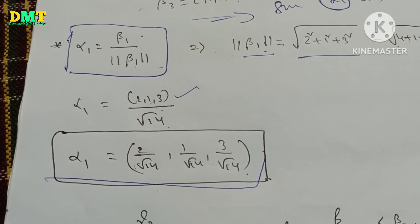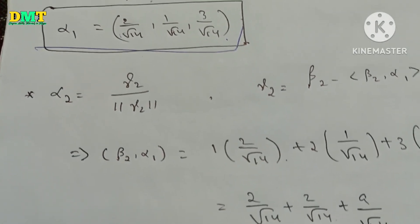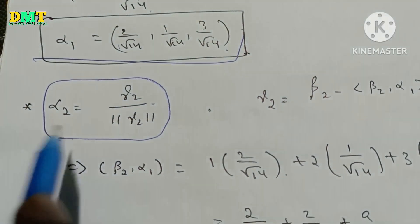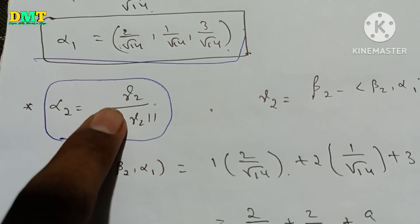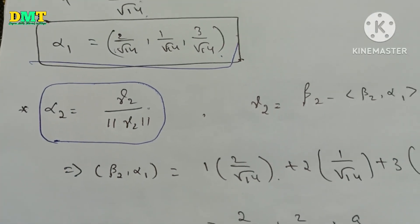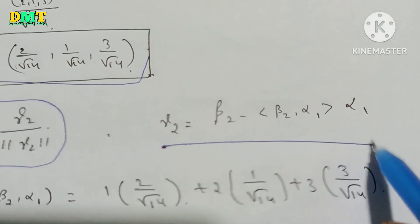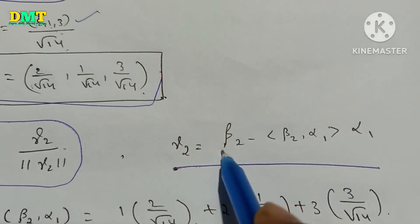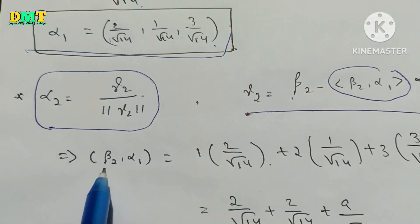First, it will be easy to do. Second, alpha2. Alpha2 is equal to gamma2 divided by norm gamma2. Gamma2 is equal to beta2 minus the inner product of beta2 comma alpha1, times alpha1. So we will find out the value.